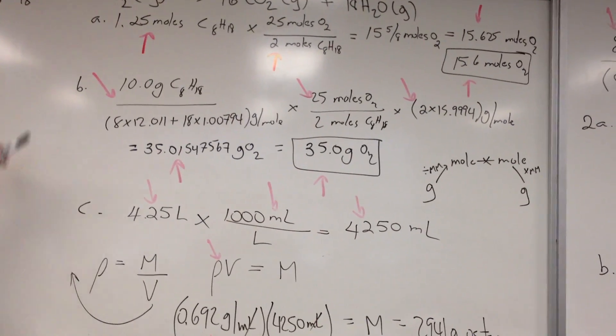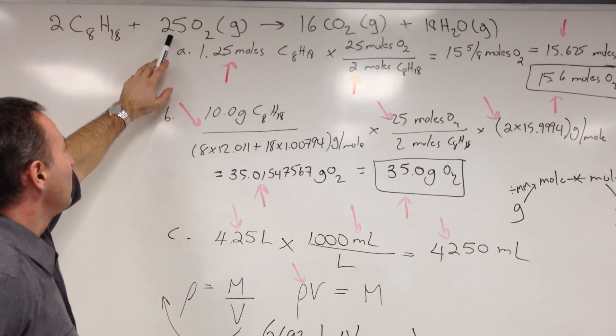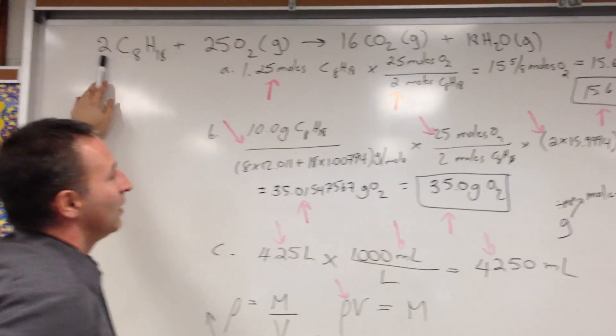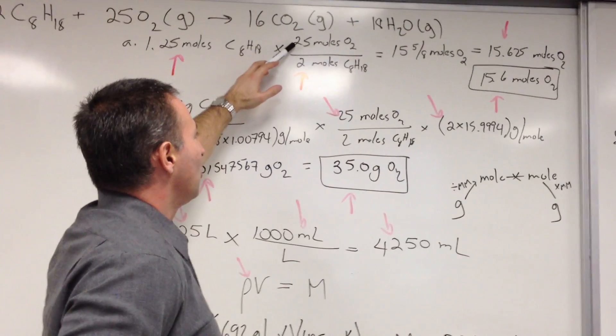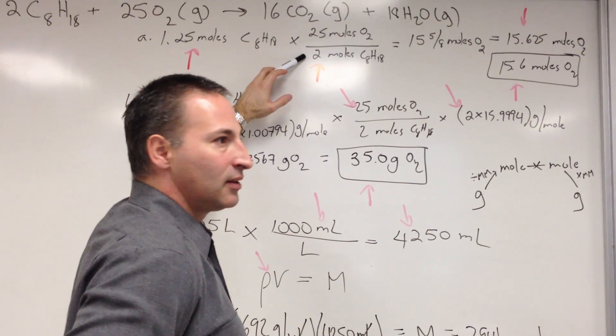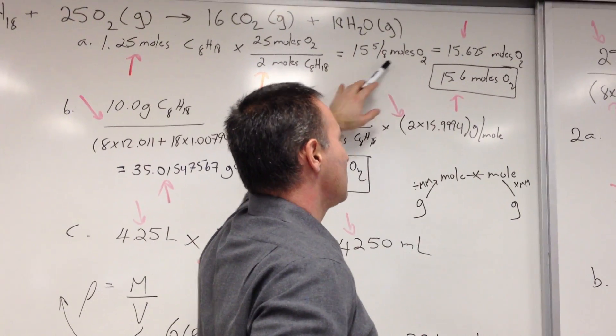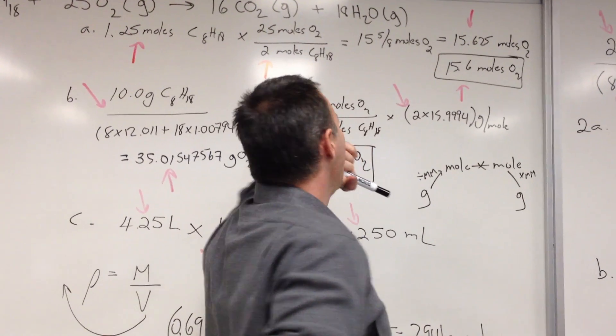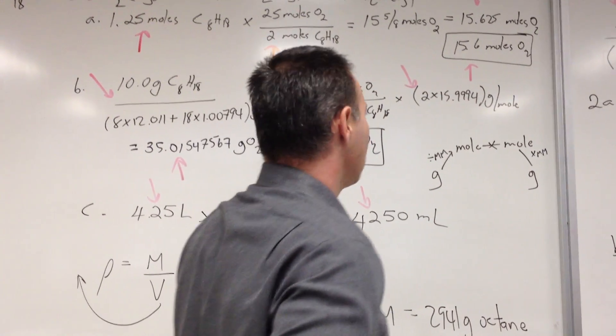The first question is, how many moles of oxygen are needed to burn 1.25 moles of octane? So we start off with 1.25 moles of octane, and the stoichiometry is 25 to 2. So 25 moles of oxygen are needed to 2 moles of octane. The answer gives you 15 and 5 eighths moles of oxygen, which equals 15.625. You're only at 3 sig figs in the answer, so I've rounded it off to 15.6 moles of oxygen.